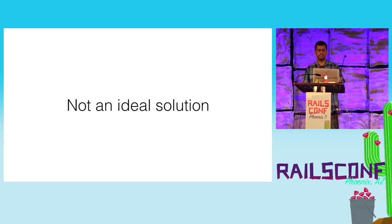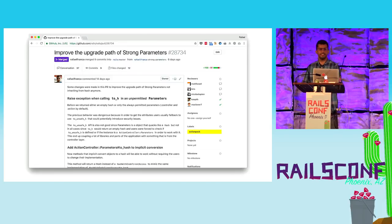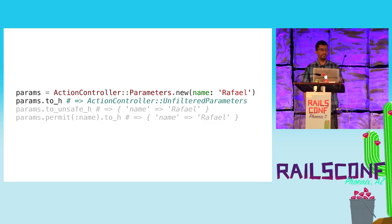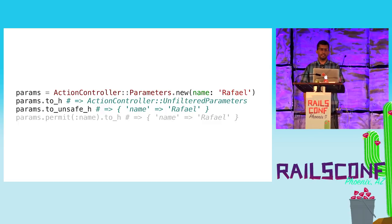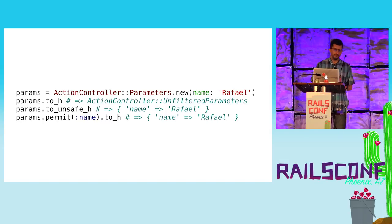We need to think of a solution that improves security but keeps it pleasant to work with. Six days ago I opened a pull request in Rails to improve the upgrade path for strong parameters. The change is: if you call `.to_h` without filtering your parameters, you get an exception. If you call `.to_unsafe_h` you get all the parameters. And if you do the filtering properly with `.permit`, you get what you want. This will help everyone have an easier upgrade and also improve security.